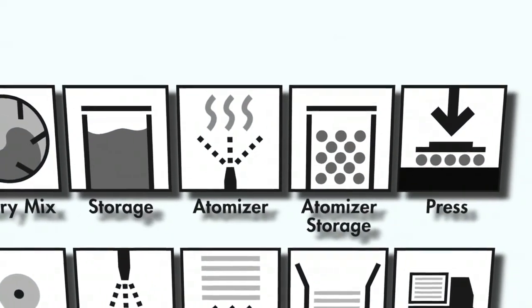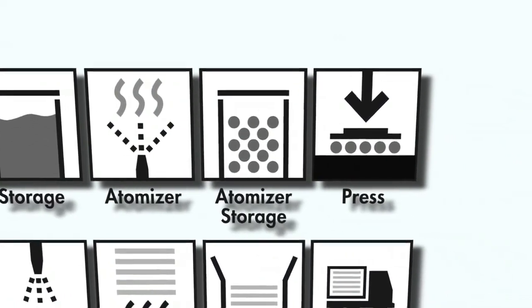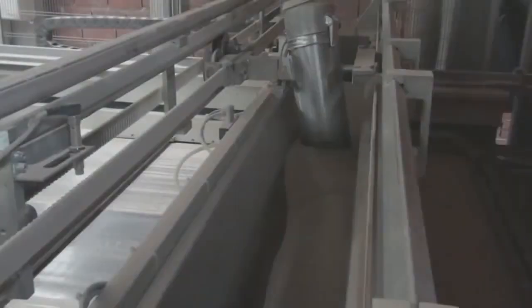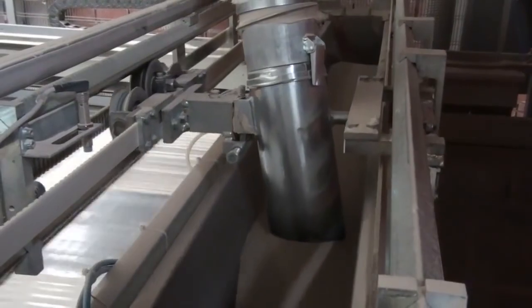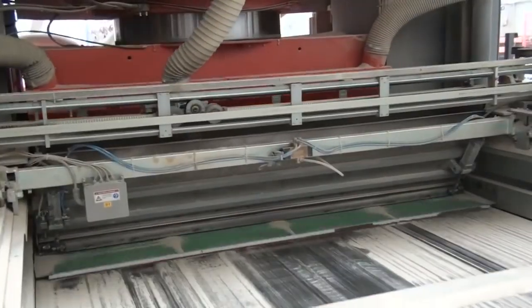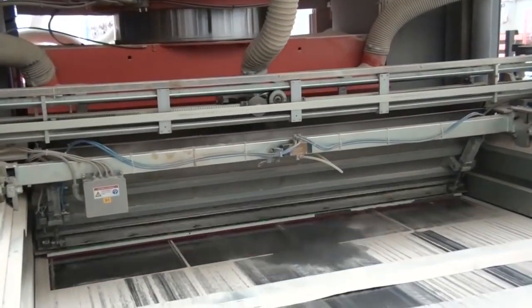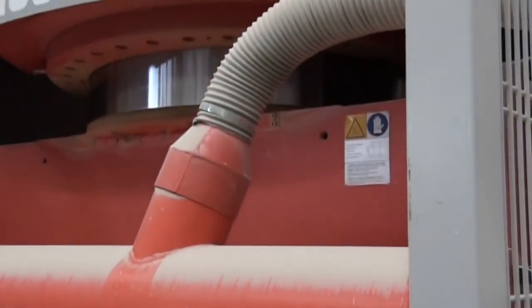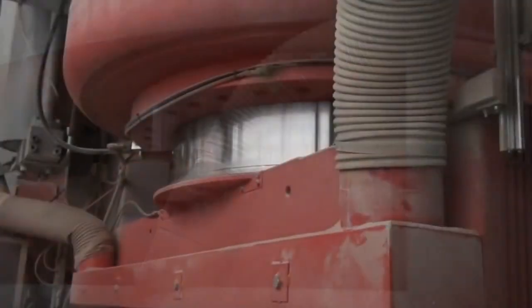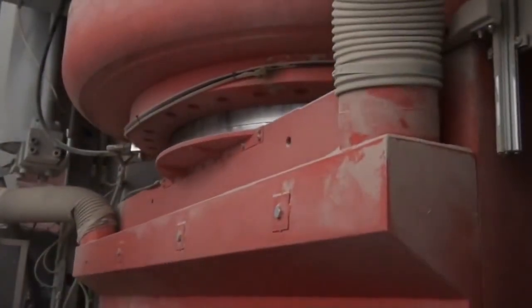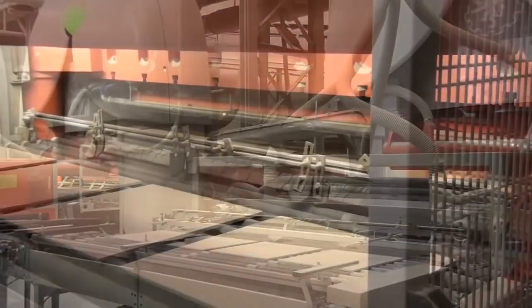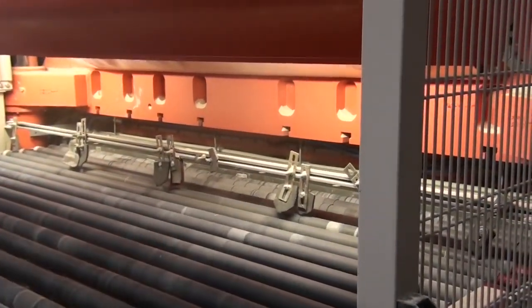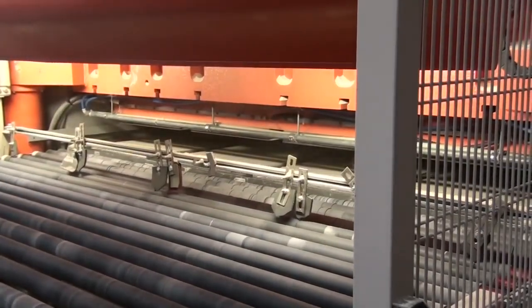The atomized powder is fed into a holding vat just behind the press. The vat releases measured quantities of atomized powder into a tray, which distributes the powder evenly into the mold. A force of 340 to 400 kilograms per square centimeter is applied using a large hydraulic press. The combination of high pressure and residual moisture turns the powder into a solid mass.